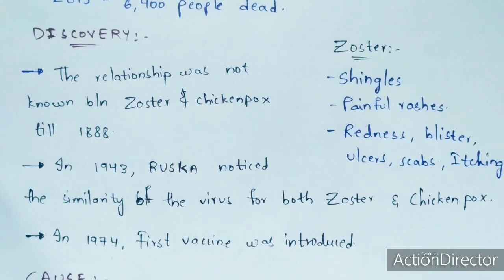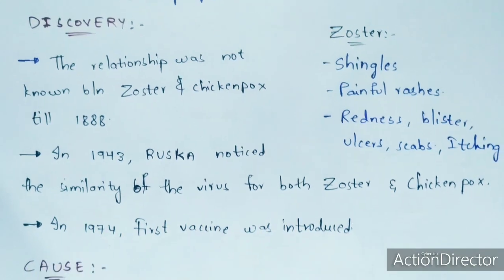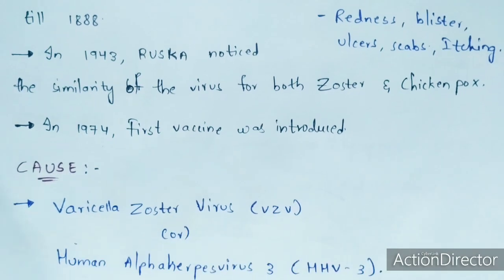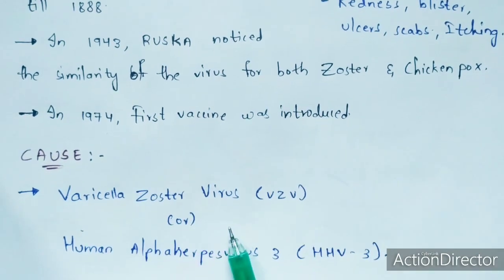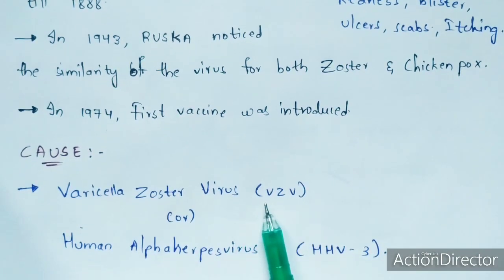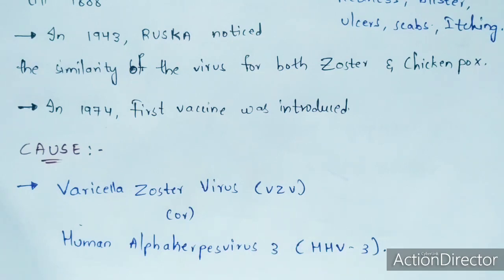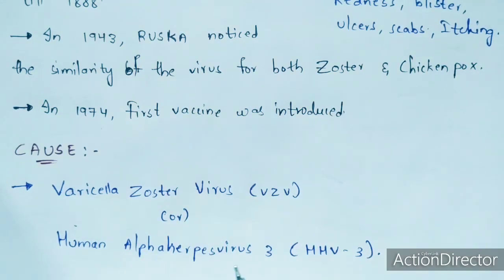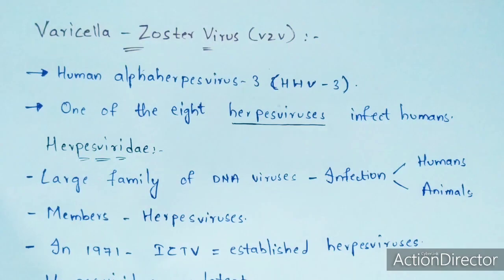Coming to the cause, varicella zoster virus, abbreviated as VZV, is the only cause — it is the only virus which causes chickenpox. This varicella zoster virus is sometimes also referred to as human alpha herpesvirus 3, shortly abbreviated as HHV3.